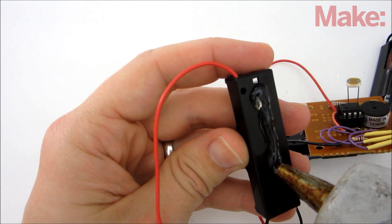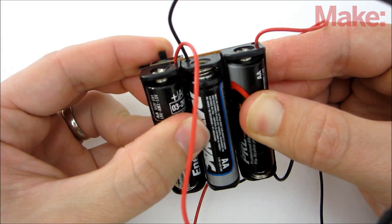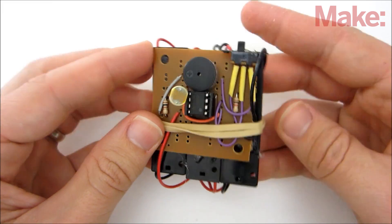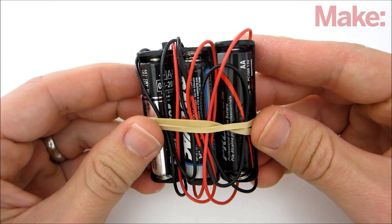The batteries and the switch are mounted to the board with hot glue. Then to keep all the loose wires under control, I wrapped a rubber band around the board.